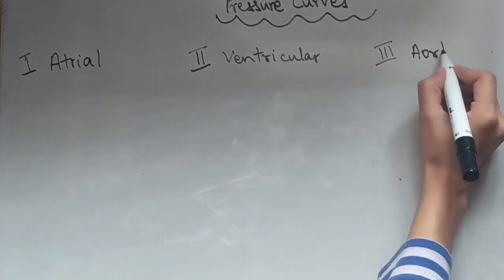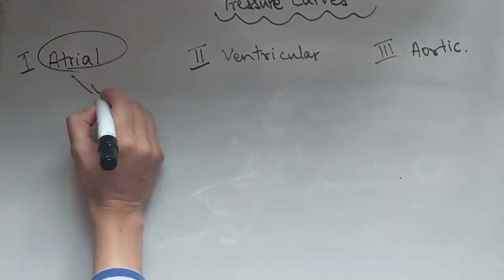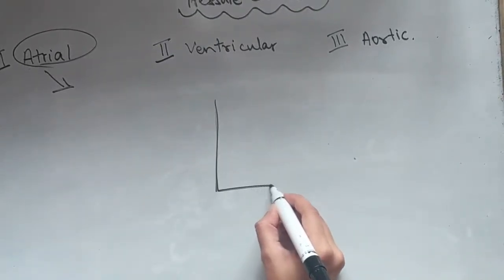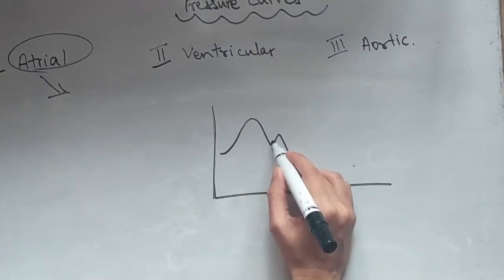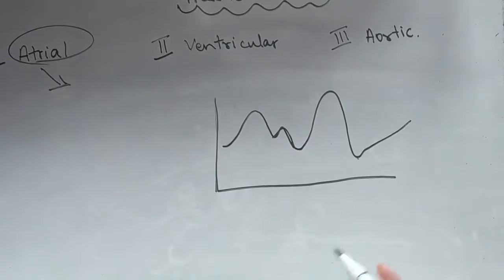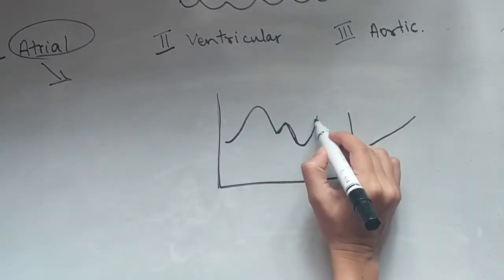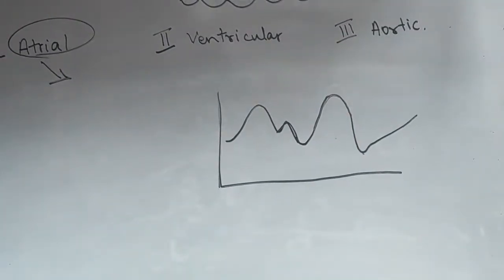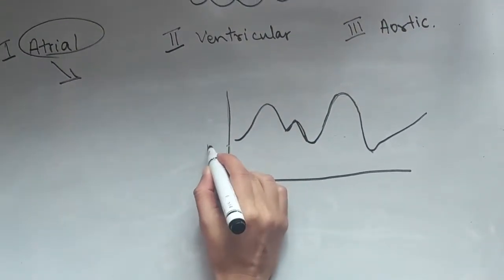We will start with the atrial one and this is what it looks like. So we've got four or rather five waves in total but three of them are important. So I'll be mentioning those. We've got a, c, x and y on the graph but we'll speak about a, c and v.